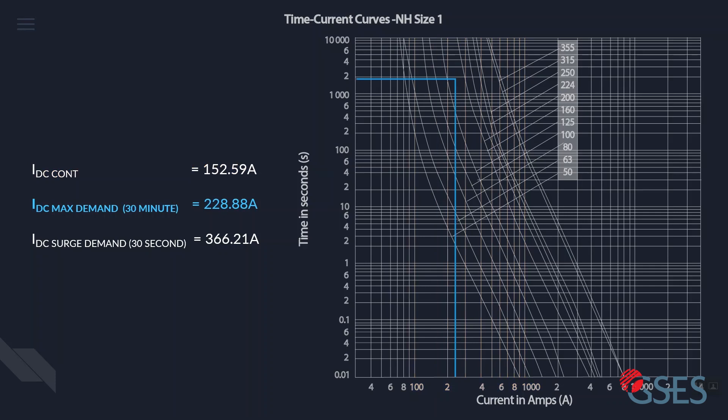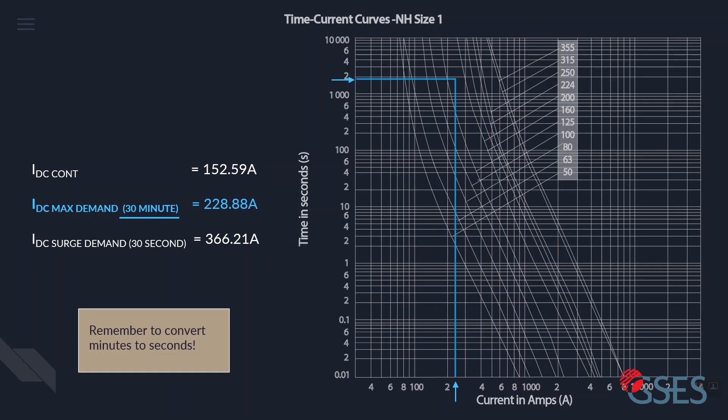Then find the intersection of the maximum demand current, 228 amps on the horizontal axis, and the time the load is at maximum demand, 30 minutes. Remember to convert minutes to seconds. In this case, 30 minutes converts to 1,800 seconds. 1,800 seconds is between 1,000 and 10,000 on the vertical axis, where each line indicates an increment of 1,000.